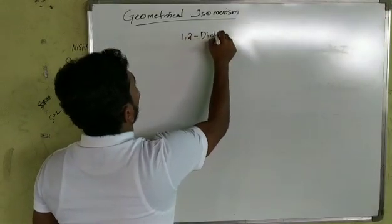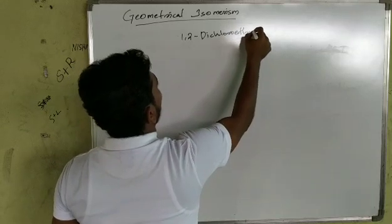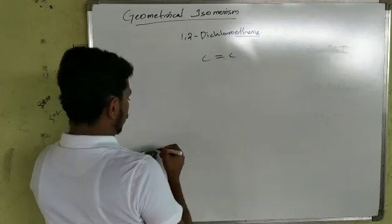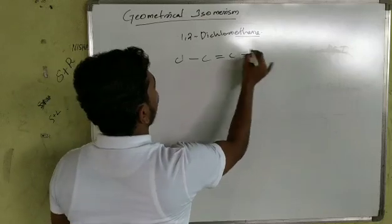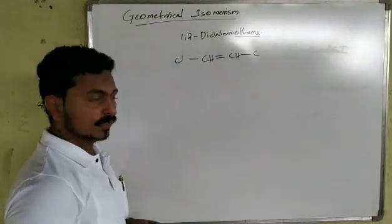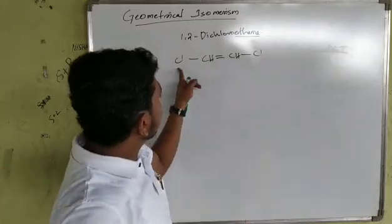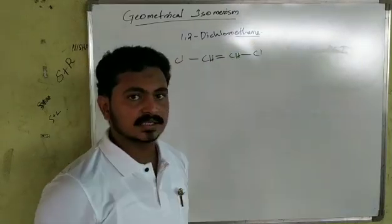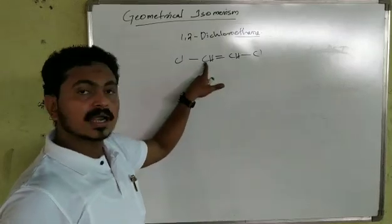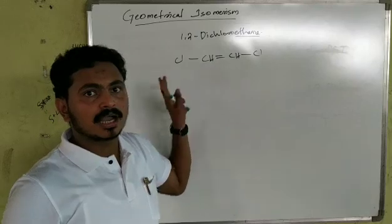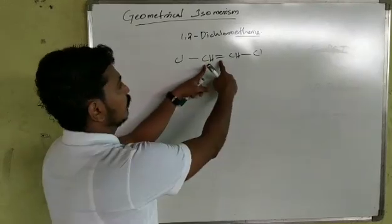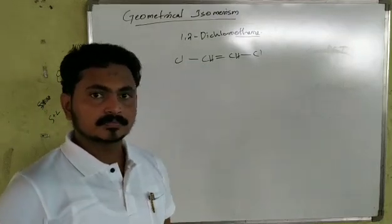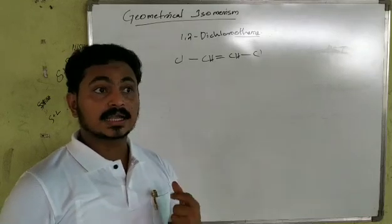Di-chloro-ethene is a good example. This is its condensed structural formula and this is the actual structure and geometry. Carbon has 4 valences: one double bond and two single bonds. The two substituents are hydrogen and chlorine, making it a trigonal planar structure.